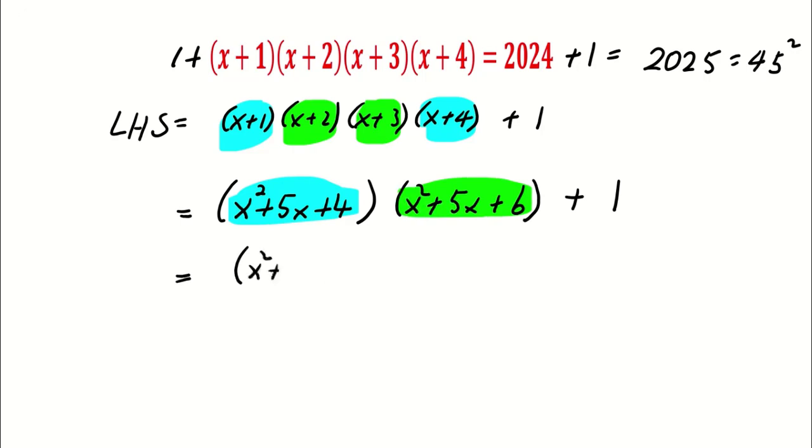Then, we write x² + 5x + 6 as (x² + 5x + 4) + 2. Expanding this gives us a quadratic expression in x² + 5x + 4.